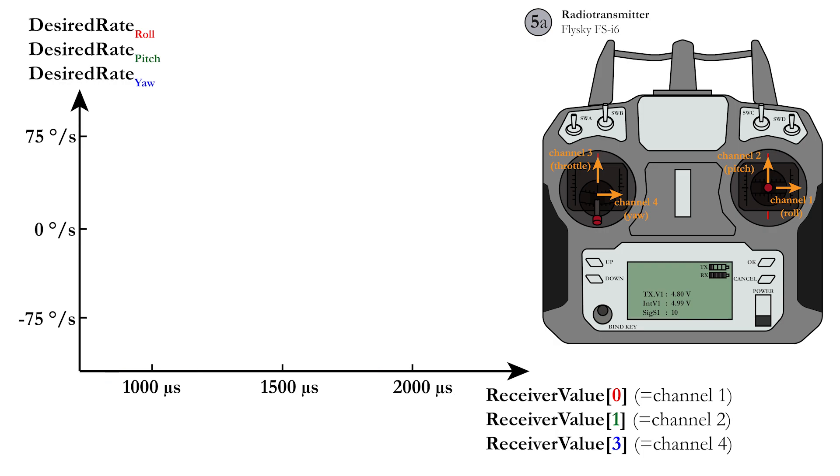For the roll, pitch, and yaw sticks, whose default position is physically in the middle of the radio transmitter at 1500 microseconds, you need to transform the PWM values to physical rotation rates.